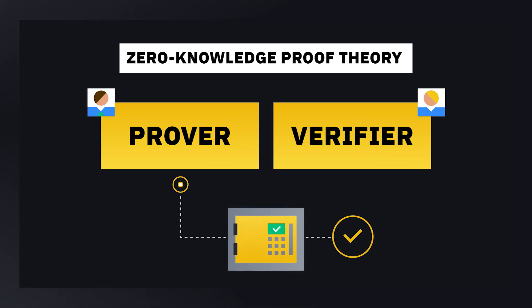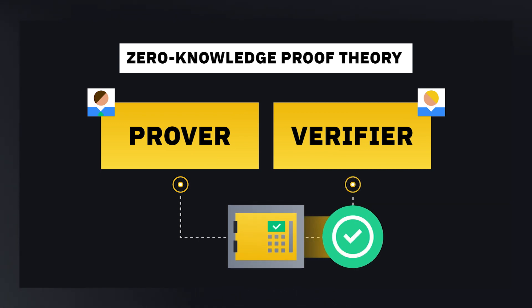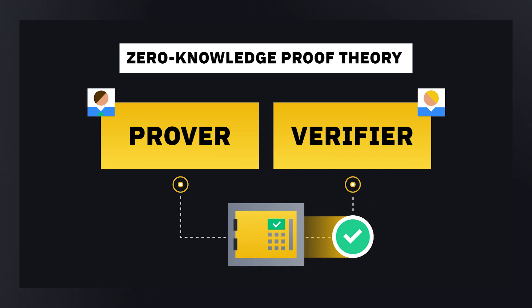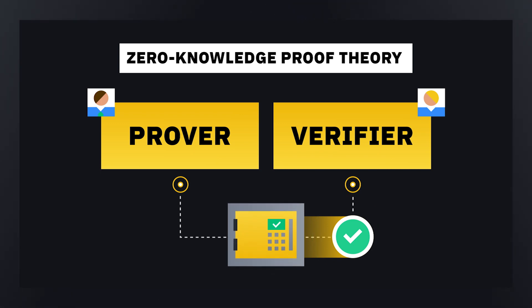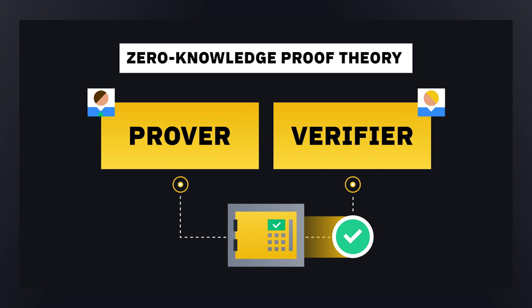The verifier would not know the code, yet could verify the prover speaks the truth. Also, the prover would have provided sufficient information without seeing what is inside the safe.